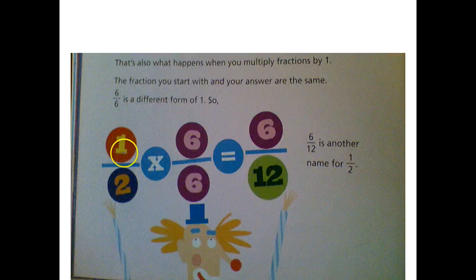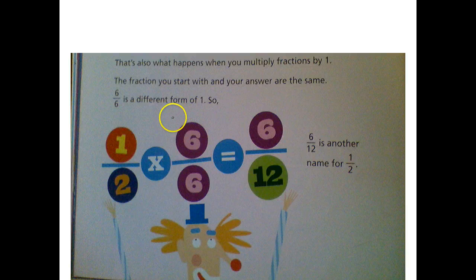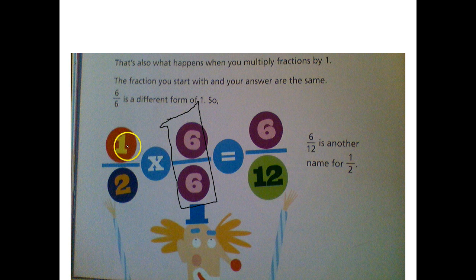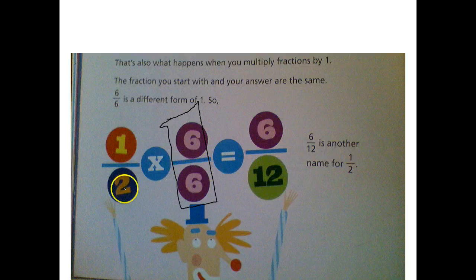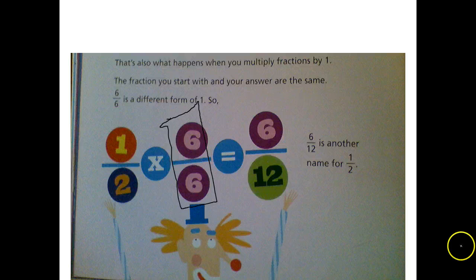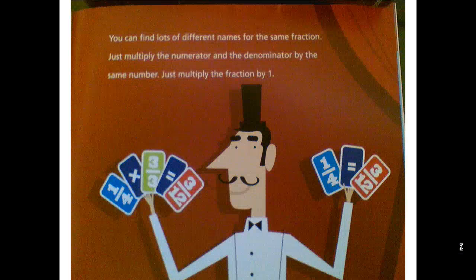The fraction you start with and your answer are the same. Six-sixths is a different form of the number one. When we multiply one-half times one, six-twelfths is another name for one-half. So one-half equals six-twelfths. They are equivalent — they look different, but we're still talking about the same size. You can find lots of different names for the same fraction.